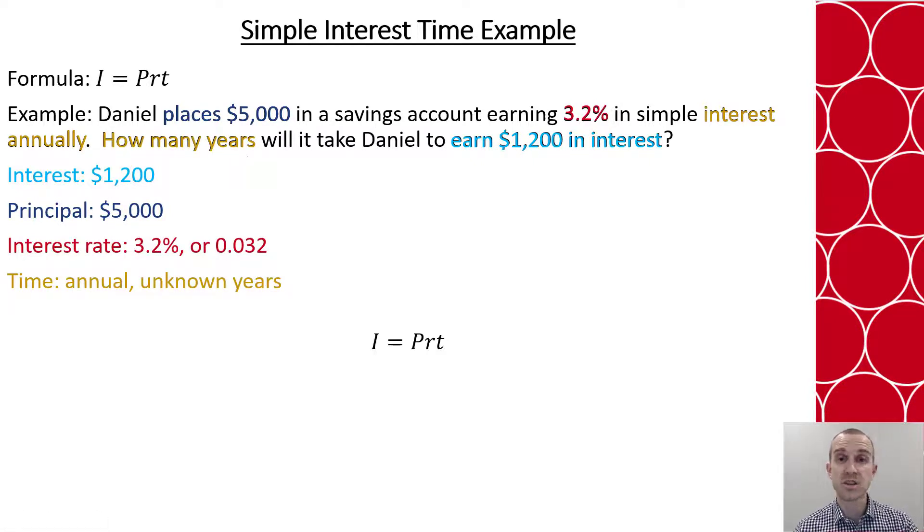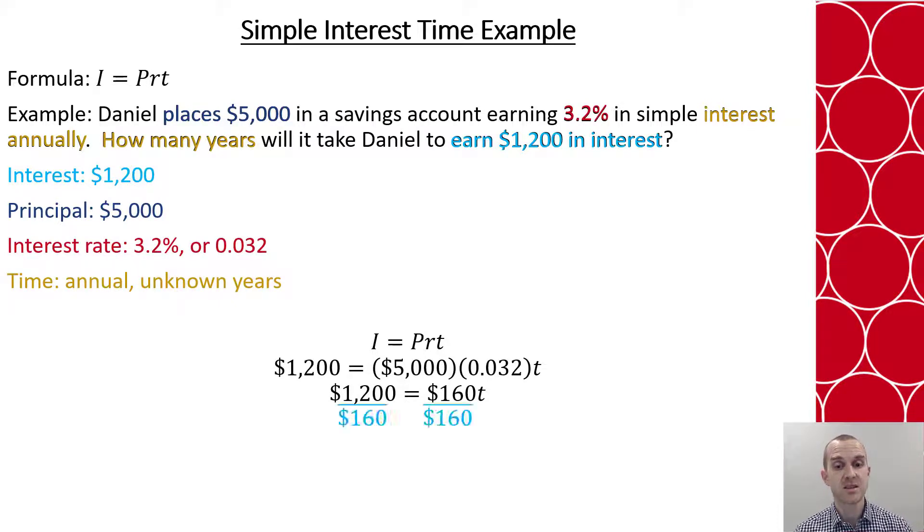We're still using the same formula. We just have to substitute and solve a little bit differently. So here I have that $1,200 equals the $5,000 times the .032 times t. I simplify my multiplication. 5,000 times the .032 will give me $160. I then divide both sides by $160.